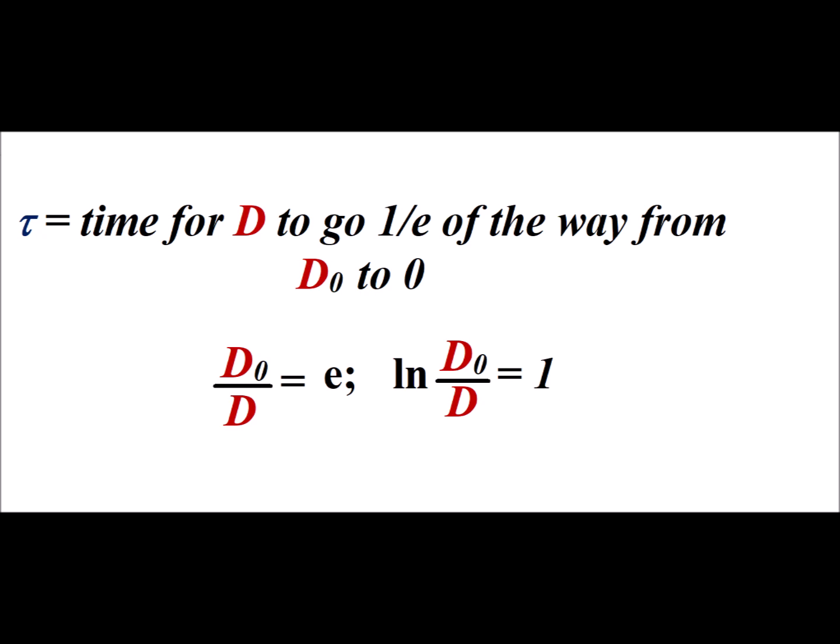Here we recall that tau is the relaxation time. It is the time for the difference D to go one over e of the way from D sub zero to zero. So in that situation, D sub zero divided by D is going to equal e, and the natural log of that expression would be equal to one when we are at tau.